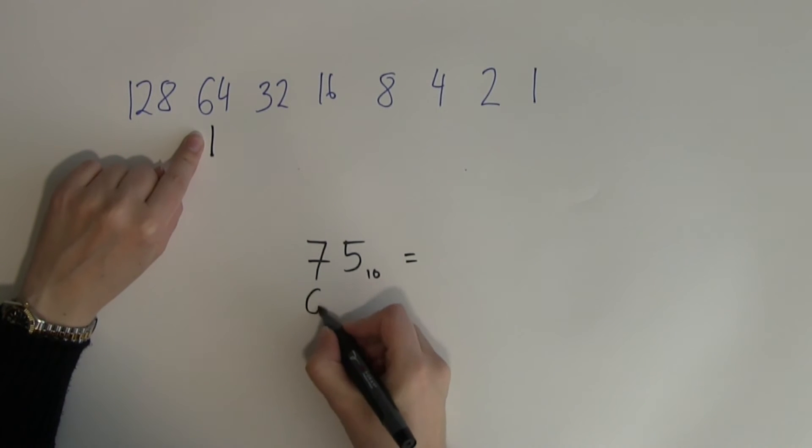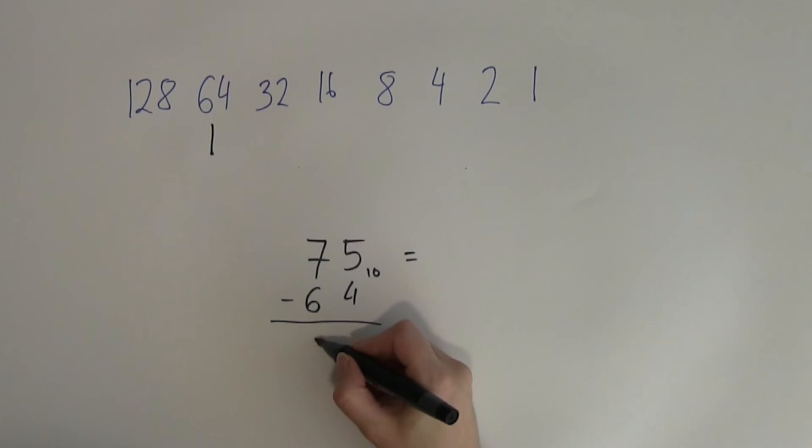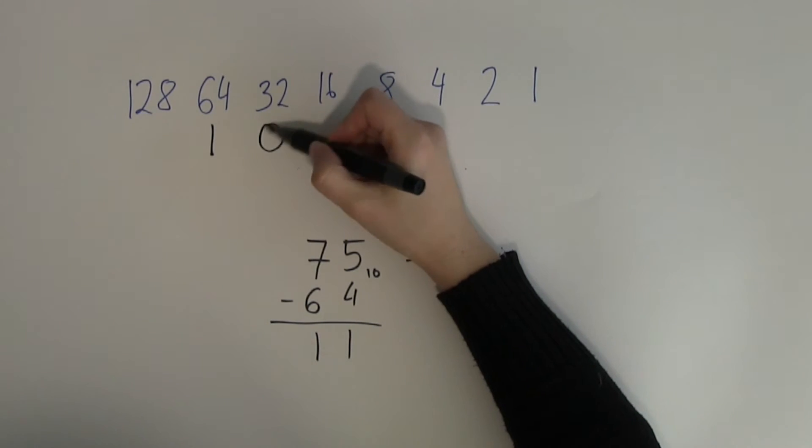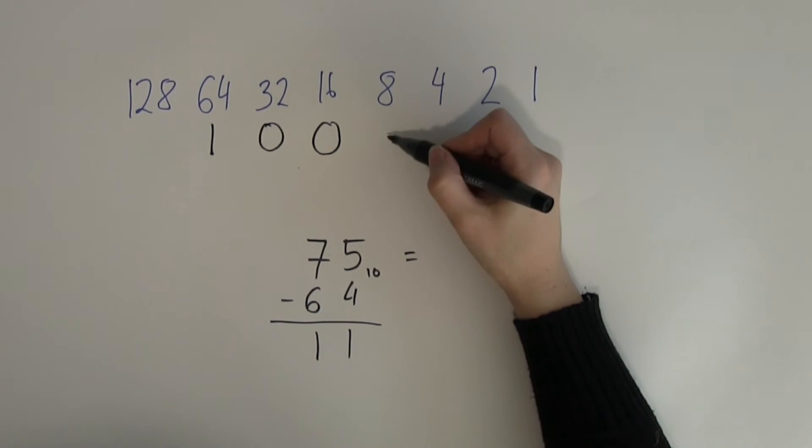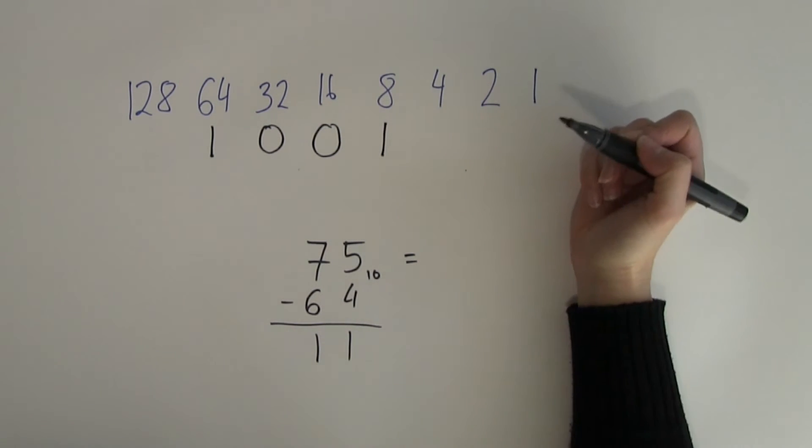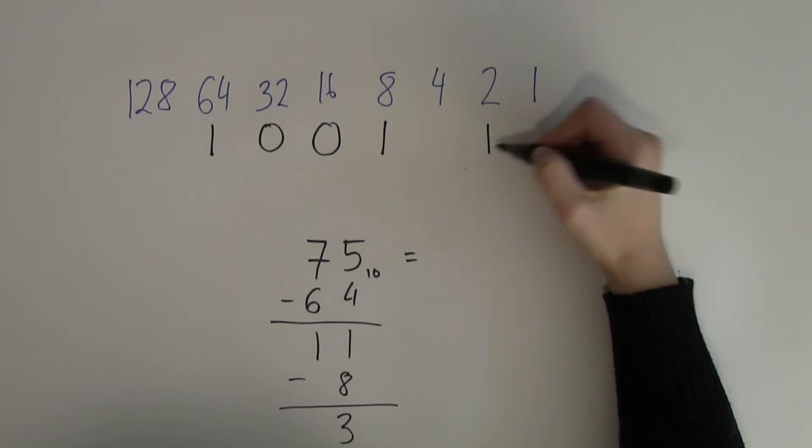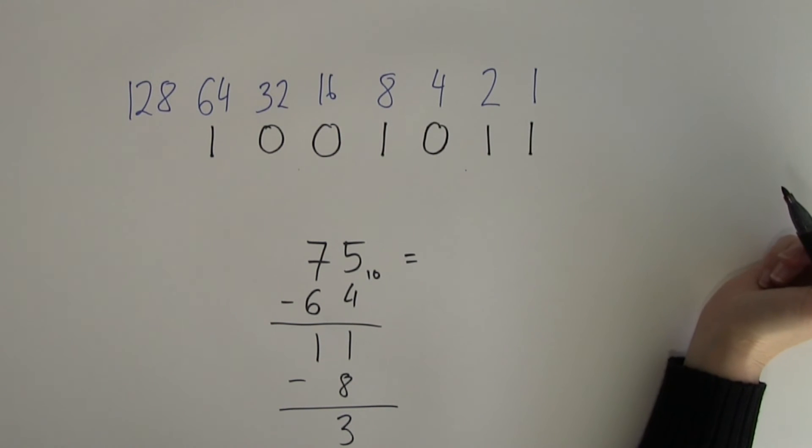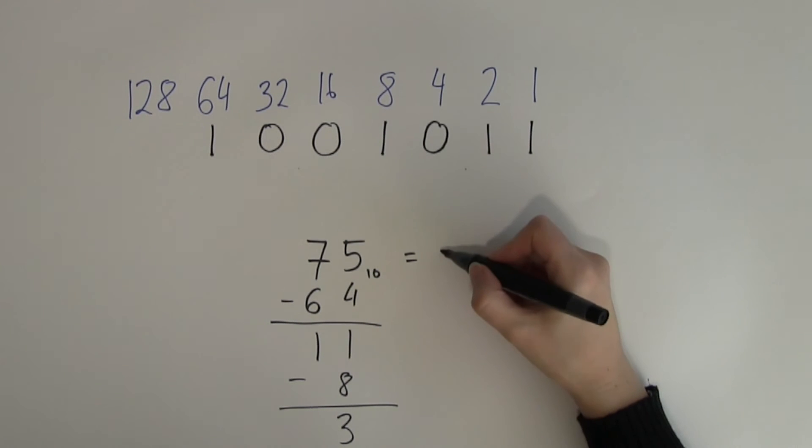Again, what is the remainder? What's the difference between 75 and 64? Easily calculated as 11. That means 32 is too big, 16 is too big, but 8 will be sufficient. If I'm using up an 8, what else do I need? The difference between 8 and 11 is 3 and 3 can be built up from 2 and 1. Again, 4 I haven't used so I need to place the 0 there to indicate that that place value is not used.